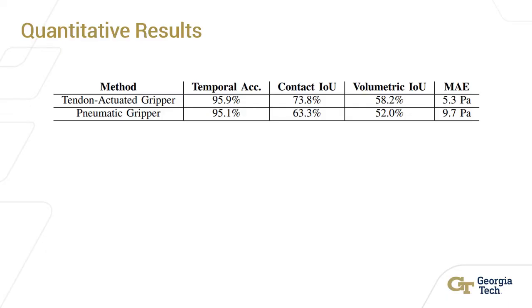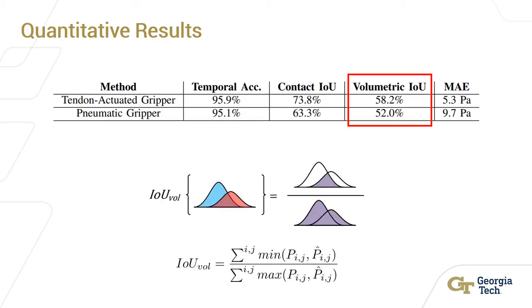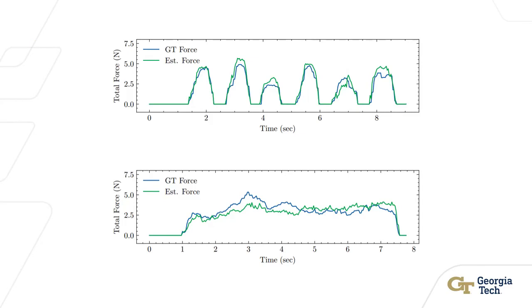We compute a variety of evaluation metrics. In particular, we focus on volumetric IOU. Intuitively, the volumetric IOU views the 2D pressure images as 3D pressure volumes where the height of the volume is equal to the magnitude of pressure. The intersection over union is then calculated between these 3D volumes. We find that the estimation for the tendon-actuated gripper outperforms the pneumatic gripper. We also show that the total force, calculated by integrating the pressure image, closely matches the ground truth measurement.